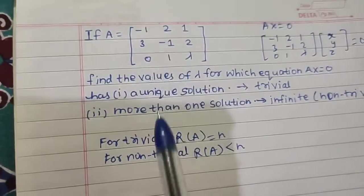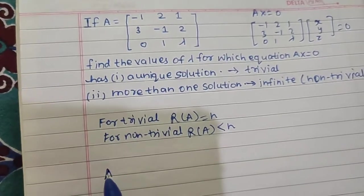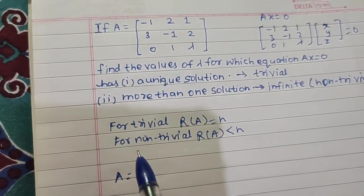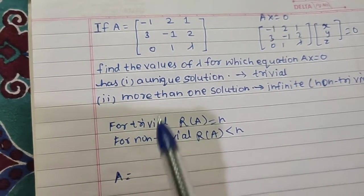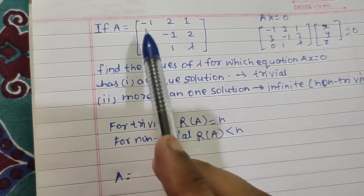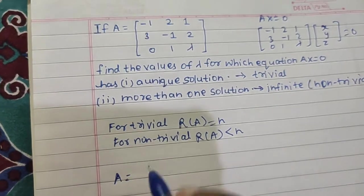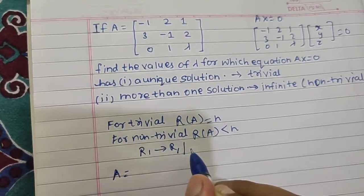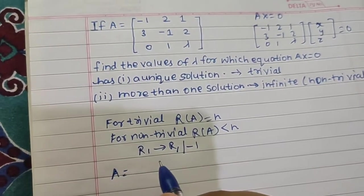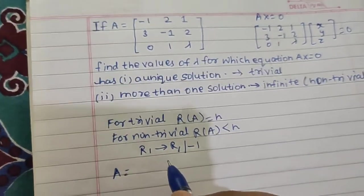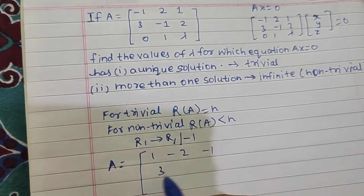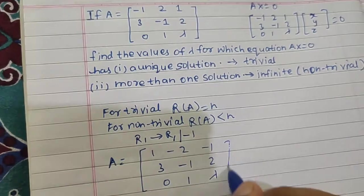We can move ahead and convert this to echelon form. I will start using operations, but first make this positive 1. For that I am writing the first operation R1 as R1 divided by minus 1. So this is 1, minus 2, minus 1; 3, minus 1, 2; and 0, 1, lambda.